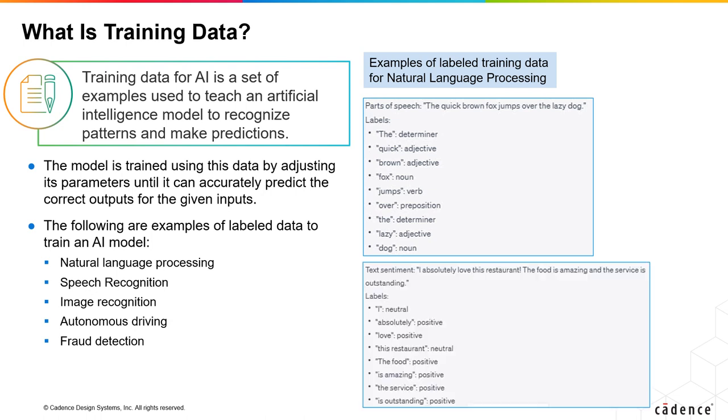Data for speech recognition is a set of audio recordings with transcripts. Data for image recognition is a set of images with labels indicating what objects are present in each image.